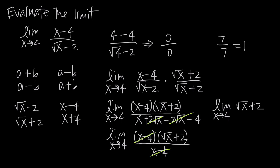Now we can evaluate using substitution. Plugging in x equals 4, we get the square root of 4 plus 2. The square root of 4 is 2, so we get 2 plus 2, which is 4. Therefore, the limit of this function as x goes to 4 is 4. We couldn't find this using substitution at the start because we got the indeterminate form, but by applying the conjugate method and canceling the x minus 4 factor, we could then use substitution to see the limit is 4. That's how you use the conjugate method to evaluate a limit.